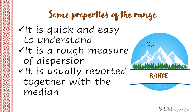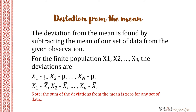Some properties of the range: it is quick and easy to understand because it only uses two values, the maximum and the minimum. It is a rough measure of dispersion and is usually reported together with the median so you know the middle value. Before we proceed to variance, let's compute the deviation from the mean. The deviation from the mean refers to the distance from or away from the arithmetic mean that we computed in the previous topic on central tendency.